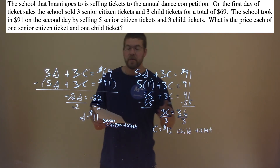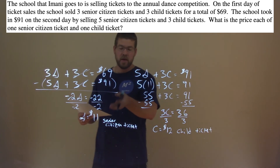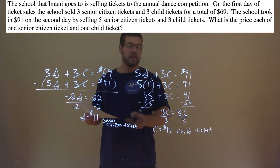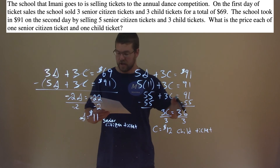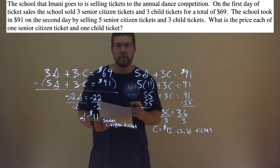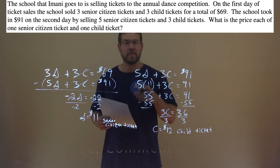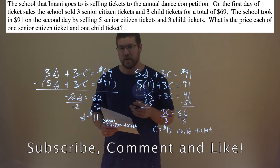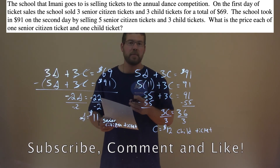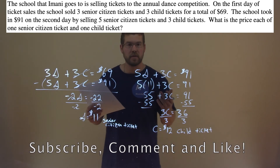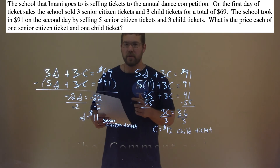So there we have our final answer. The price of a senior citizen ticket is $11, and the price of a child ticket is $12. I hope this video is helpful. If it was, please subscribe to this YouTube channel and like this video — this helps us make more free math lessons for you and for everyone else. Thanks for watching.